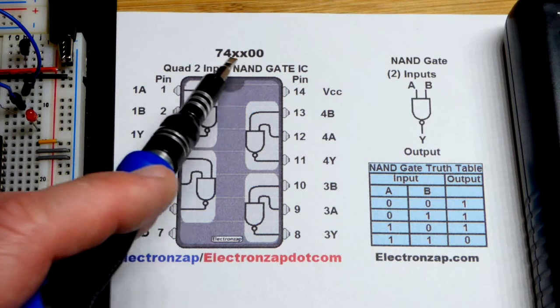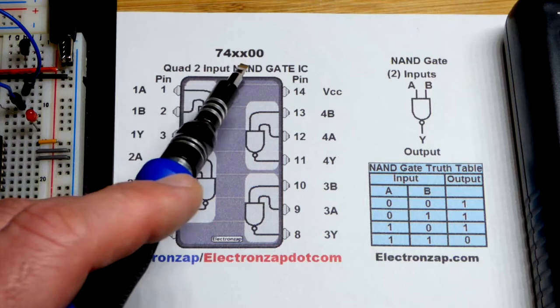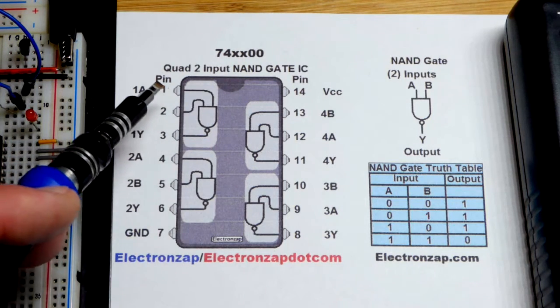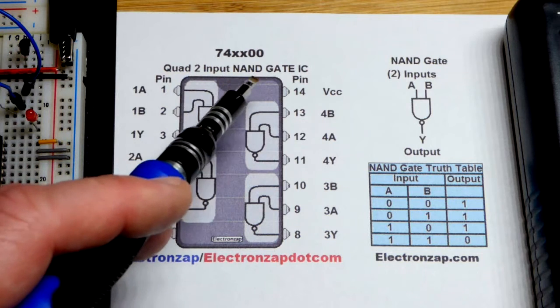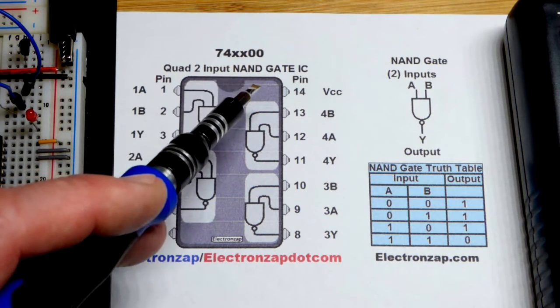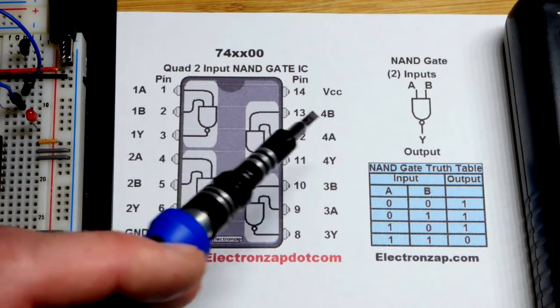I'm using the HC version. There's also LS that is common and there's other versions. So those letters go where those two X's are. Now it's a quad 2 input NAND gate. So I did a couple videos using the NAND gate with the switches and with the transistors. This one's more efficient. A lot better option.